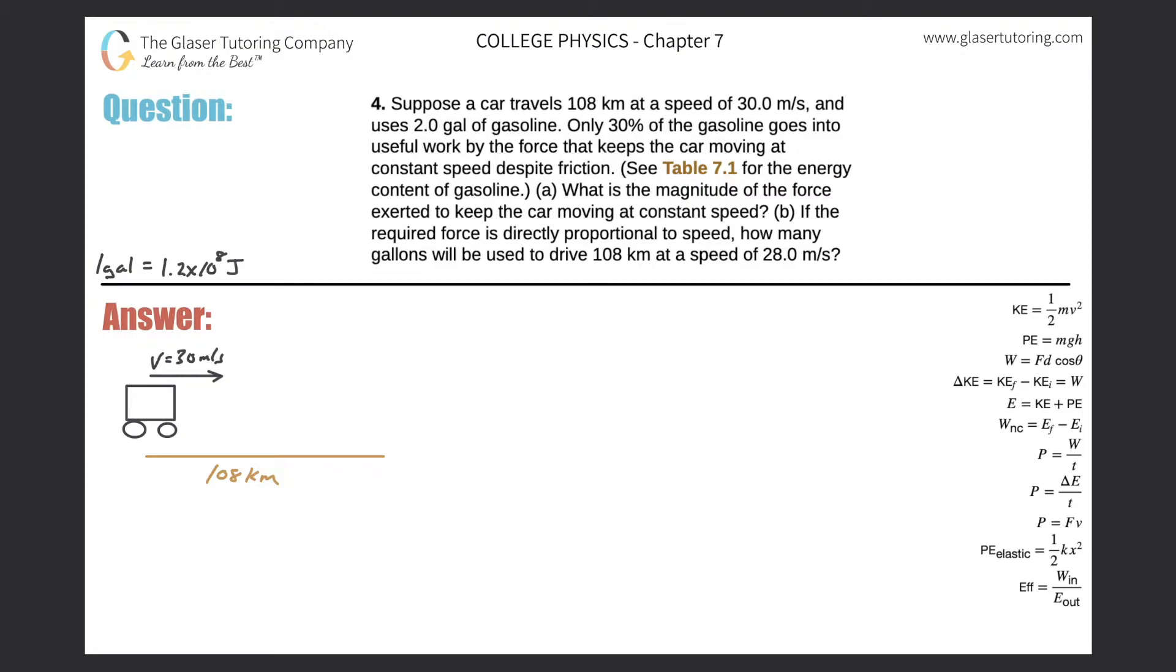Number four: suppose a car travels 108 kilometers at a speed of 30 meters per second and uses two gallons of gasoline. Only 30% of the gasoline goes into useful work by the force that keeps the car moving at constant speed despite friction. See table 7.1, I got that value guys over here on the left hand side. So here's the setup.